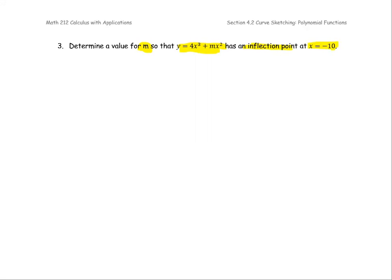The key term is inflection point. How do we find the inflection point? We find the critical value by finding the second derivative and setting it equal to zero, and it occurs at x equals negative 10. So we're going to replace x with negative 10 after we get the expression for y double prime.